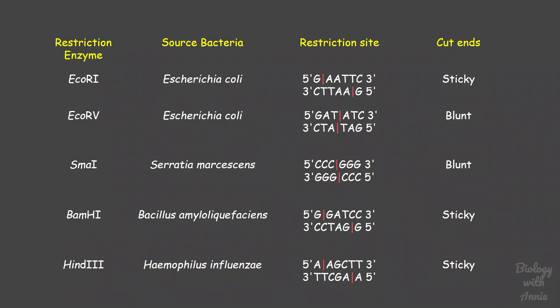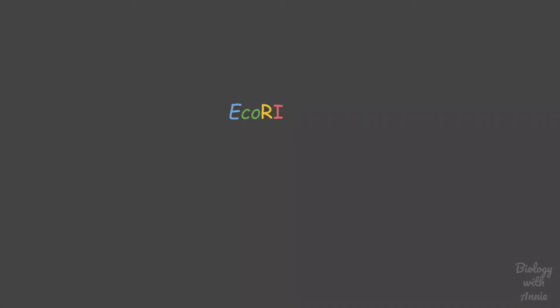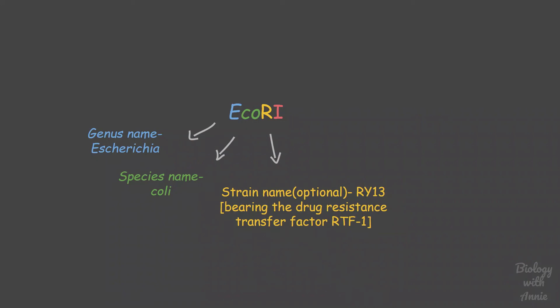Since there are so many restriction enzymes, it became important to have a naming convention which every scientist would have to follow. When naming a restriction enzyme, the first letter has to be an abbreviation of the genus name, the second and third letter is an abbreviation of the species name, the fourth letter represents the particular bacterial strain and this is optional. Finally, a Roman numeral is added if multiple restriction enzymes have been isolated from the same bacterial strain, so that the order of identification is known.